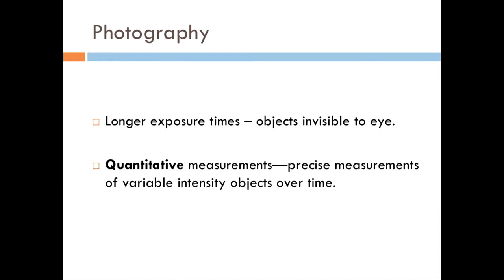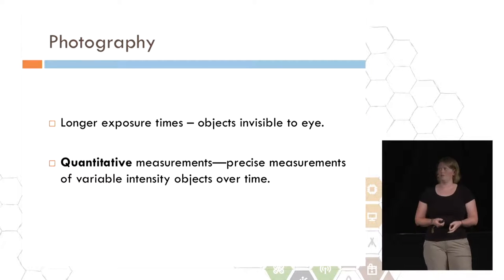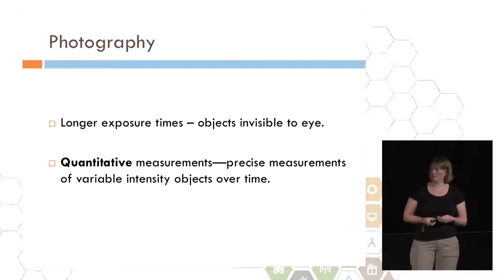The next advance in telescope technology was photography. The original telescope observations were just done with the naked eye. You looked at what you saw, you drew in your notebook, and then the next night you would do the same thing. You could track changes this way, but it wasn't extremely precise. Photography offered two things. One, longer exposure times. Your eye only sees what it sees in that instant, but you can expose a photographic plate for seconds to minutes. The next thing it offered was quantitative measurements. You could expose an image of the same star every single night and expect to get something that was relatively similar. This allowed precise measurements of things that varied over time.